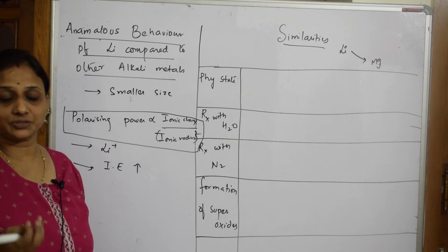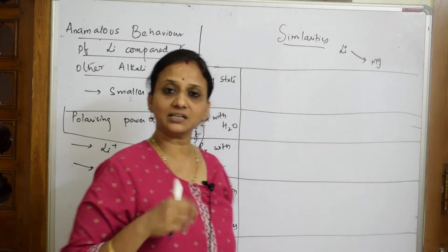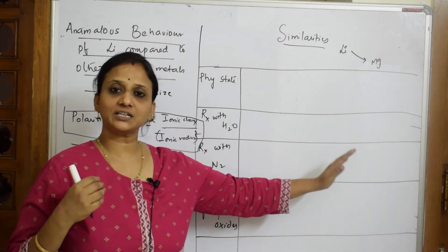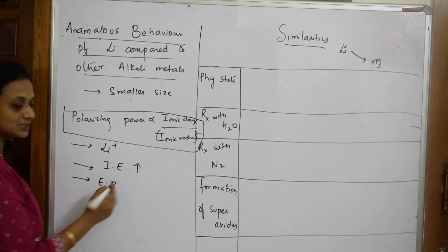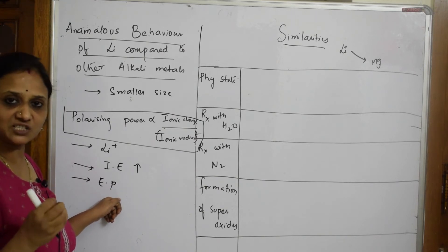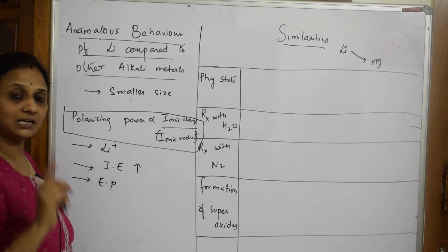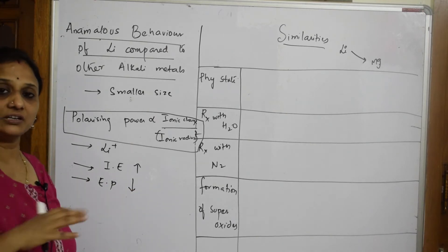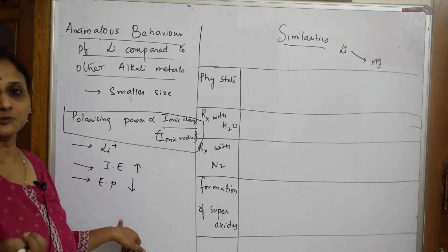Electropositivity is the ability to donate electrons. Moving left to right in the periodic table, electropositivity decreases and electronegativity increases. Because lithium has a very small size and very high ionization enthalpy, its electropositivity — the ability to donate electrons — is very low. High ionization enthalpy means low electropositivity.